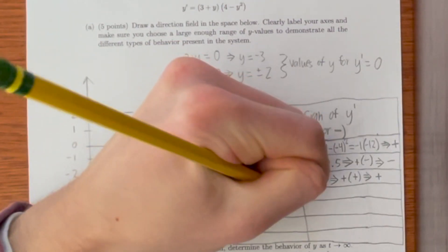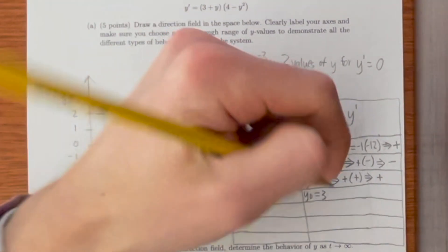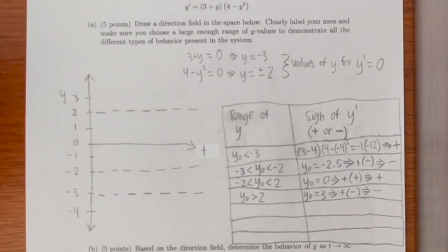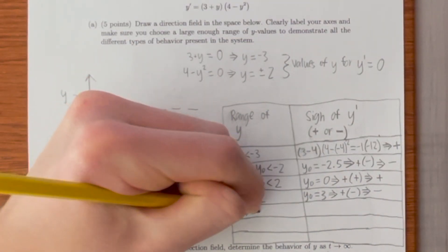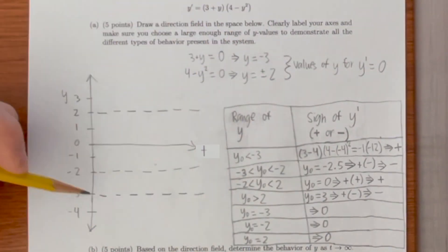Let's try y naught equals 3. Once again we'll have a positive number here and a negative number here. So a positive multiplied by a negative is going to give off a negative. As we found before, when y naught is equal to negative 3, negative 2, and 2, the sign is neither positive or negative, the slope is 0.